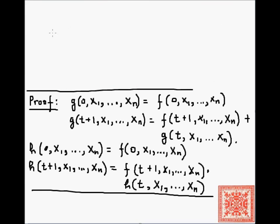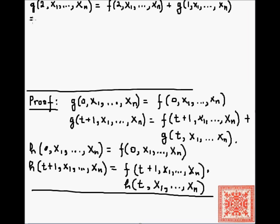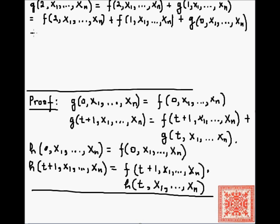The proof is finished: we have used primitive recursion to define G and H. Since F is already in C and addition is primitive recursive, G is in C. H is defined through binary multiplication, which is also primitive recursive, and hence H is in C because C is primitive recursively closed.